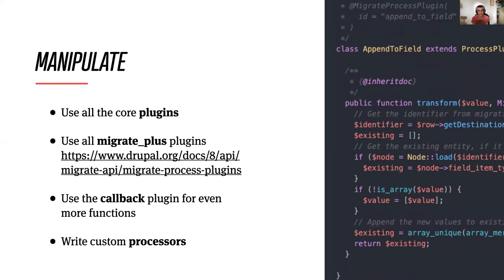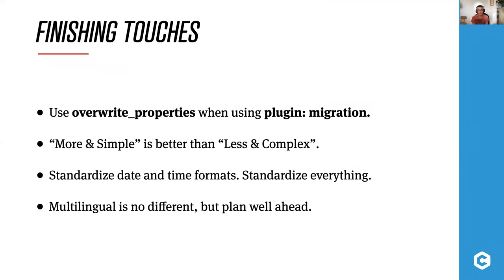Sometimes even that is not enough. My best tip is using the callback plugin — a super simple plugin that allows you to call custom PHP functions. When even that is not enough, we write custom processors. The example here, 'append to field,' is a custom processor that knows how to load a node and add an item to an existing field that might already have data. When we build these custom processors, we keep them generalized and reusable — a few processors can really give you everything you need.